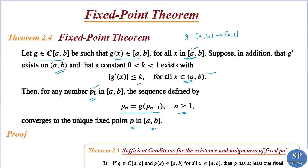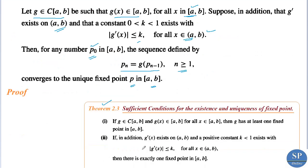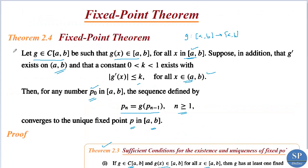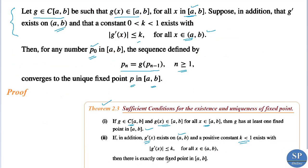To prove this theorem we can use Theorem 2.3 and the mean value theorem. Theorem 2.3, discussed in lecture 4, states: if g belongs to C[a,b] and g(x) belongs to [a,b] for all x in [a,b], then g has at least one fixed point in [a,b]. In addition, if g' exists on (a,b) and there is a positive constant k < 1 with |g'(x)| ≤ k, then there is exactly one fixed point in [a,b].